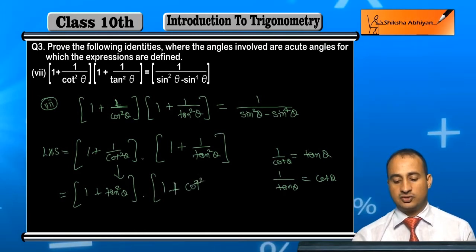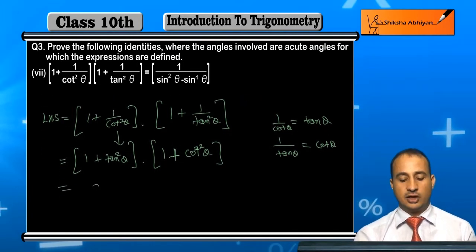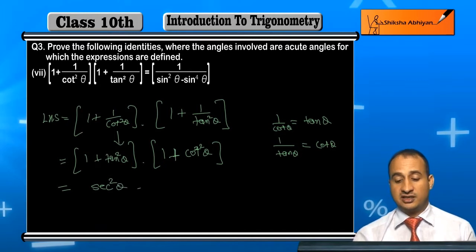this becomes cot²θ. Now you know, 1 + tan²θ is sec²θ. Here, 1 + cot²θ is cosec²θ.